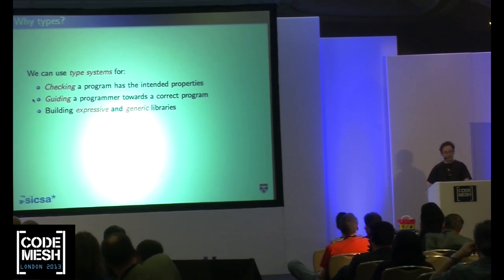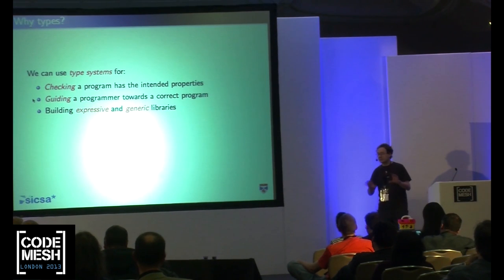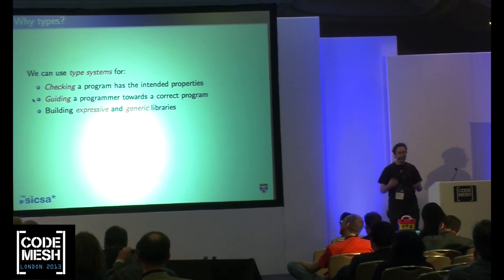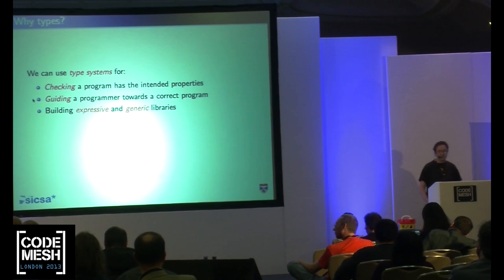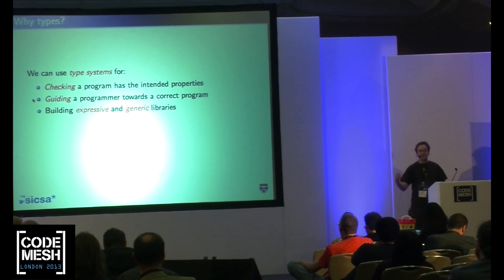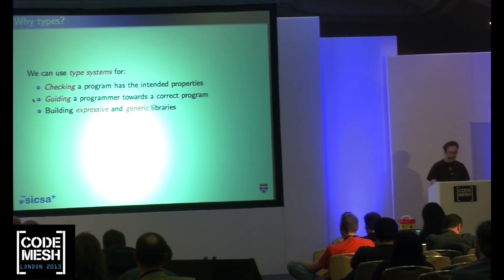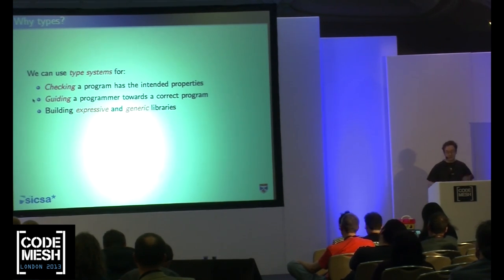So here I said what type systems are for. Typically we think of them as checking a program has the intended properties we've specified, and guiding a program towards the correct program — we've got a thing we're trying to do and we've got some values that might go in it. Later on, we'll see how we can also use them to make fairly generic and expressive libraries.